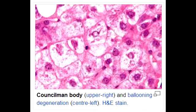What is a Councilman body? A Councilman body is an eosinophilic globule often surrounded by normal parenchyma, found in the liver.